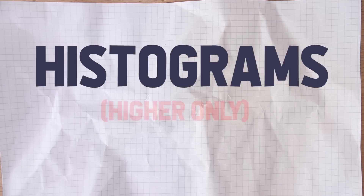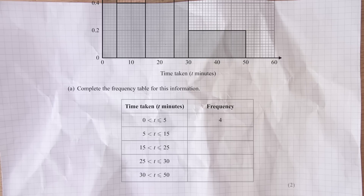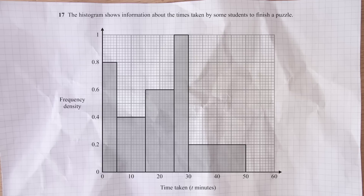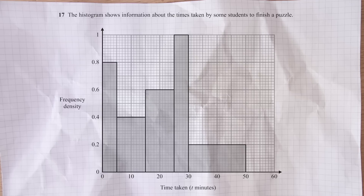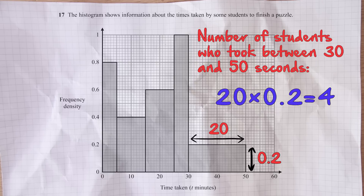Next up is Histograms - here's what a Histogram looks like, this is an example of a Histogram question. What they often want to test is whether you understand how to find the frequency from a Histogram. To find the frequency you have to find the area of each bar - that is the big thing to remember. To find the frequency, you multiply the width by the height; in other words, you find the area of each bar.